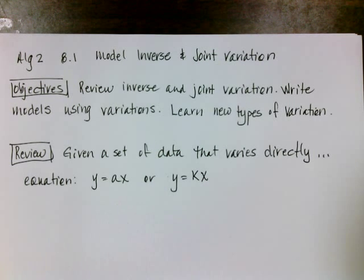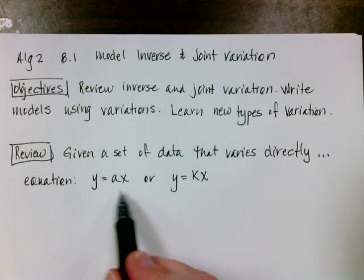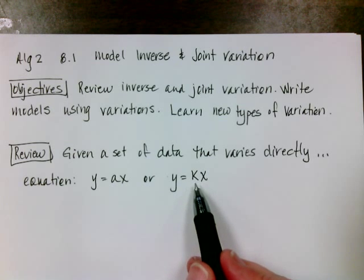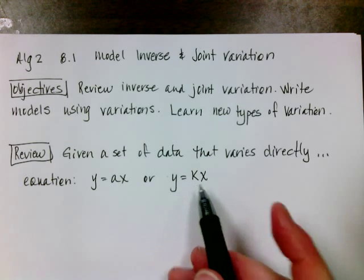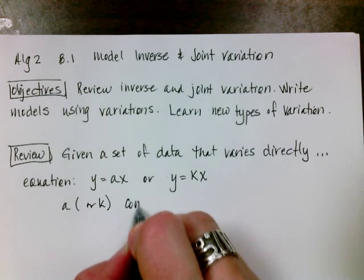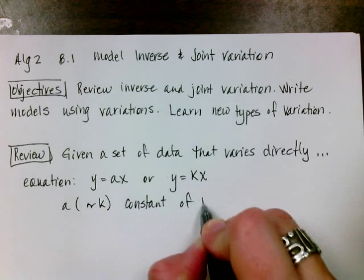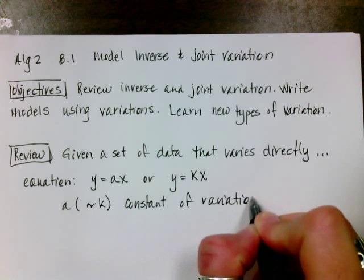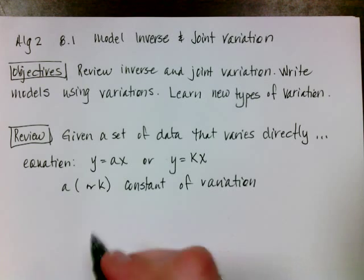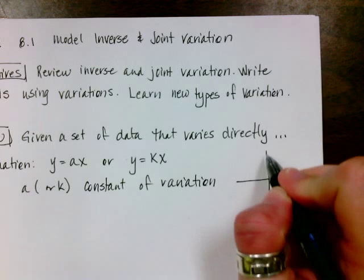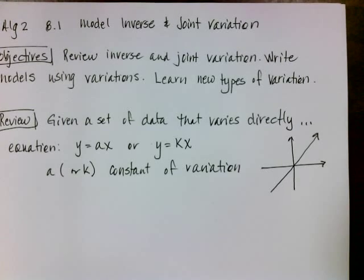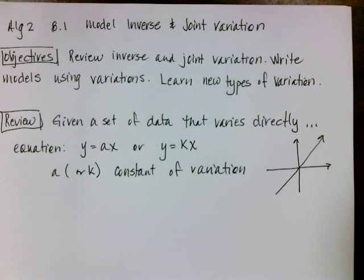The basic equation is y equals ax or kx. This particular book likes to use an a. I've always used a k in the past, so if I mix the two up, I just have a constant of variation. So a, or k, in case I screw up, is going to be the constant of variation. And remember that constant of variation, another word would be the slope, has to be the same for the entire line. So if I graphed it, if you'll remember from the deep, dark recesses of your brain, direct variation goes through the origin, and then the a represents a slope.